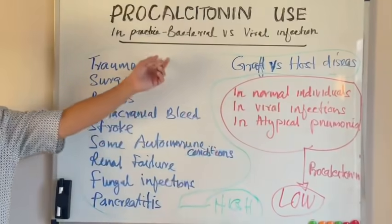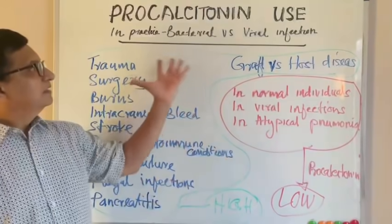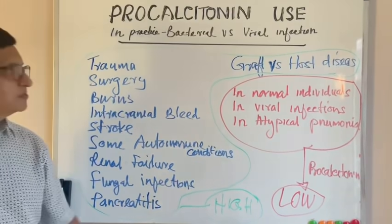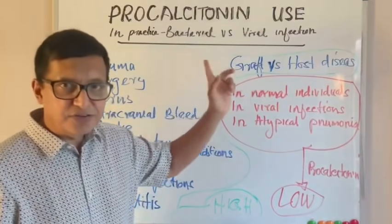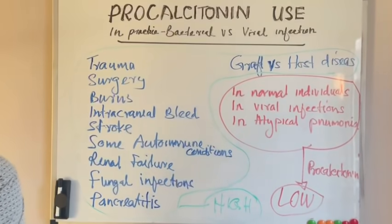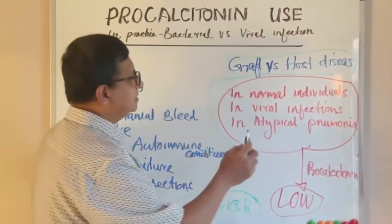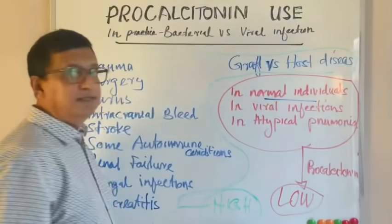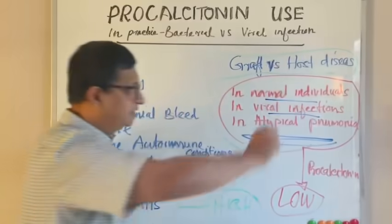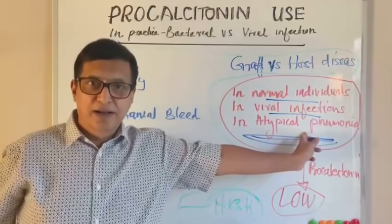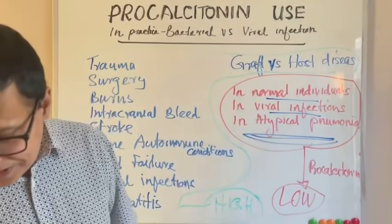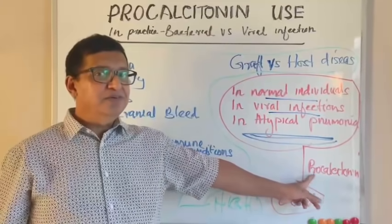That is a disadvantage — this accounts for the other 30% of conditions which can cause raised procalcitonin. Low or normal procalcitonin levels can be seen in normal individuals and in viral infections. Remember that even in atypical pneumonia — that is, Mycoplasma and Legionella — procalcitonin levels are low or normal, so that is a situation where you still have to use antibiotics.